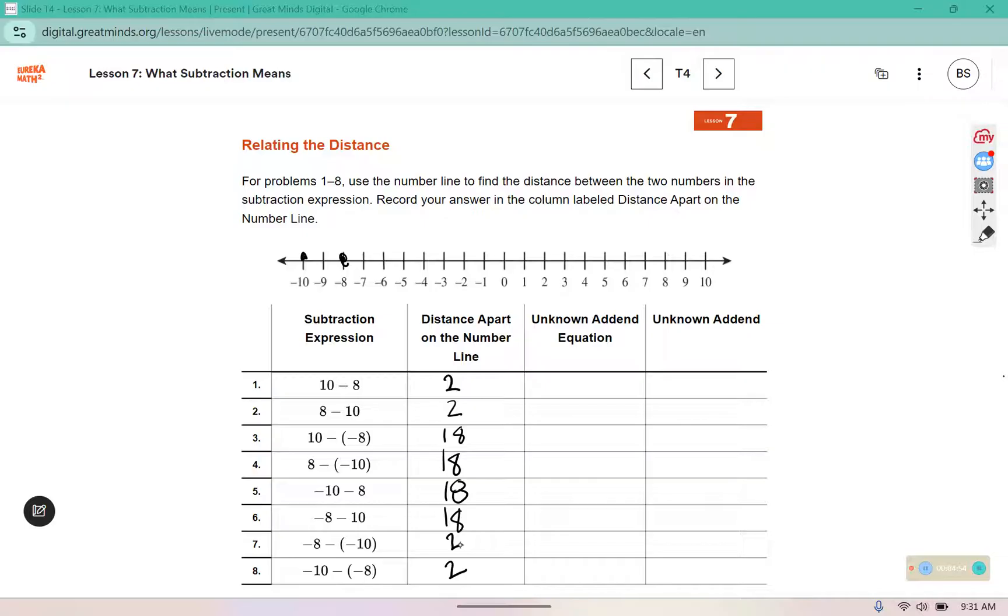Not a single one of these subtraction expressions is identical, but some of our distances are the same. Let's look at 10 minus 8 and 8 minus 10, the first two. What do you notice about these expressions? They have the same numbers, 8 and 10, but they're subtracted in different orders. We know that in addition expressions, addends can be added in any order. So if we had 8 plus 10, it would be the same as 10 plus 8. But can they be subtracted in any order? No, you can't subtract numbers in any order. We just saw that if you had 10 objects, you could take 8 away, but if you had 8 objects, you couldn't take 10 away.